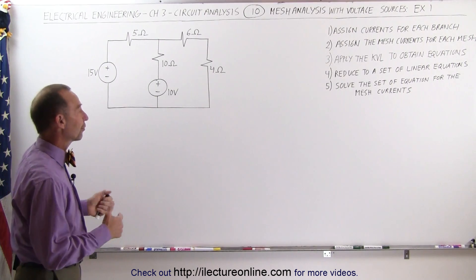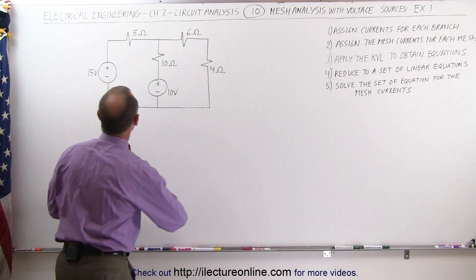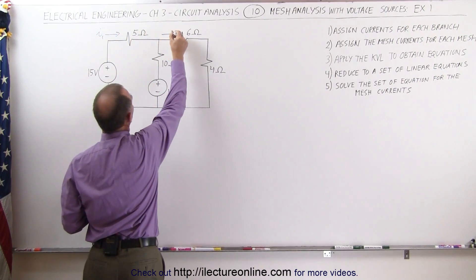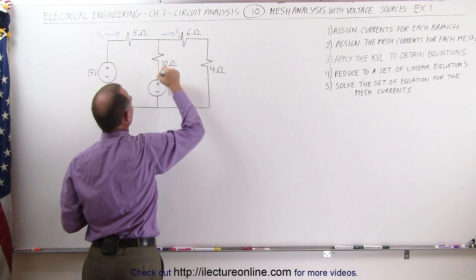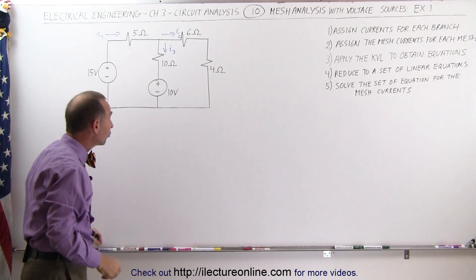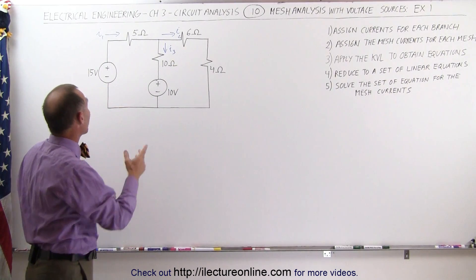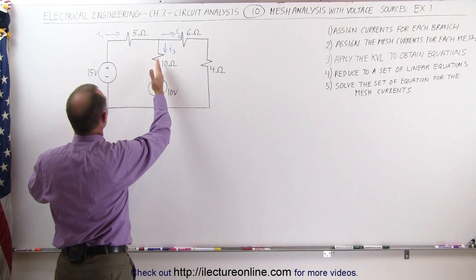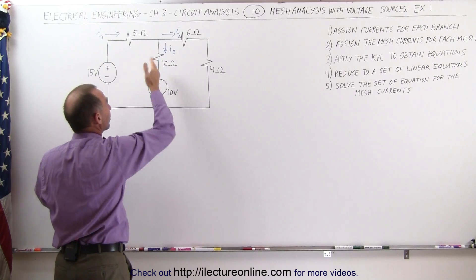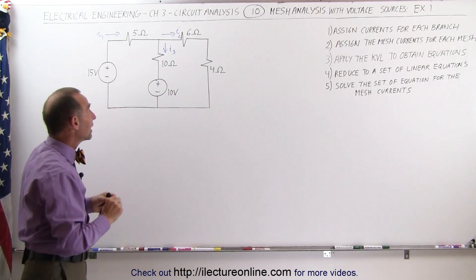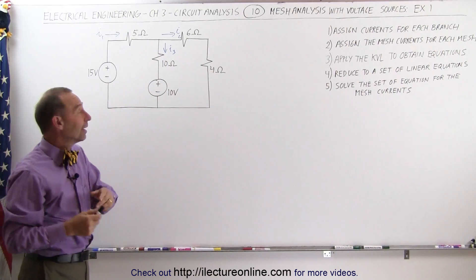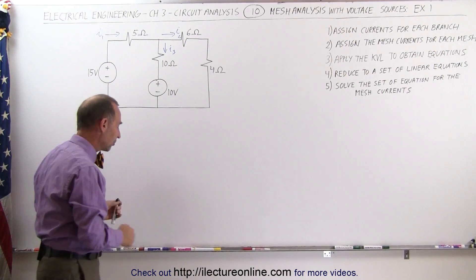The first thing we do is assign currents for each of the branches. Let's call this I1, this I2, and this I3. It doesn't really matter what the order is. Assuming that's the direction of the current, however, looking at the voltage source, it could be that the current is actually flowing in the other direction through this particular branch. But it doesn't matter if we chose the wrong direction — we'll get a negative answer telling us that it's really in the opposite direction.